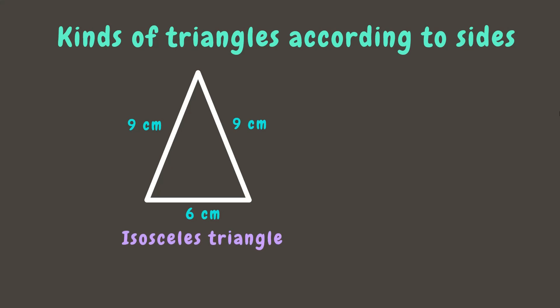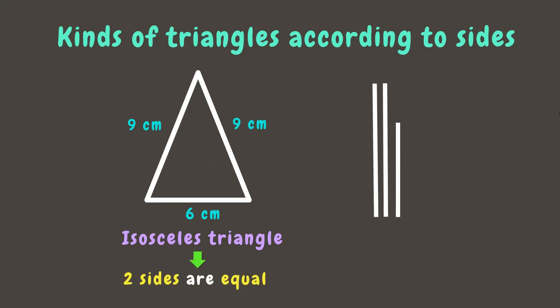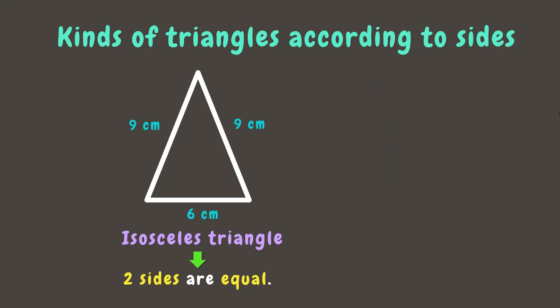In an isosceles triangle, only two sides have the same length or are equal. Here we can see that two sides both measure 90 centimeters, while the other one measures 6 centimeters. Another example: this triangle has two sides both measuring 14 meters, while the other one is 10 meters, which means it is an isosceles triangle. We can also use tick mark symbols — only two sides share the same symbol, which means they are equal, while the other side has a different symbol.